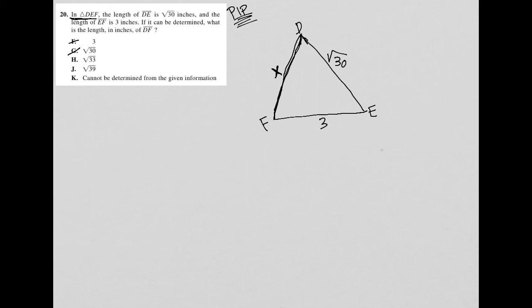Somehow this root 33 seems like it's just adding 3 and 30 together, which doesn't make any sense. This root 39, what math would you do to prove that it should be root 33?